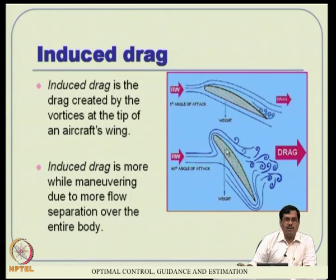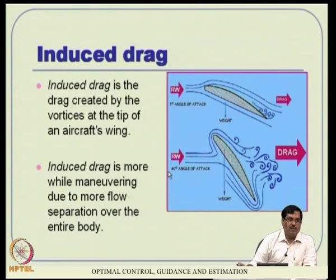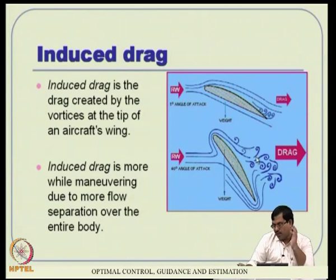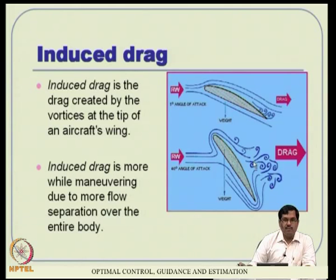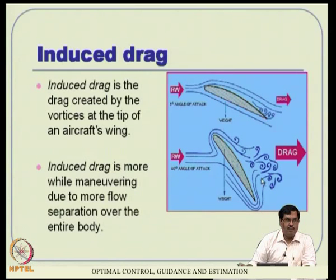One of the control design objectives in missile guidance is to minimize induced drag through an optimal way of lateral acceleration generation. This leads to what is called proportional navigation (PN) guidance, which is very popular in missile guidance and implicitly minimizes induced drag.